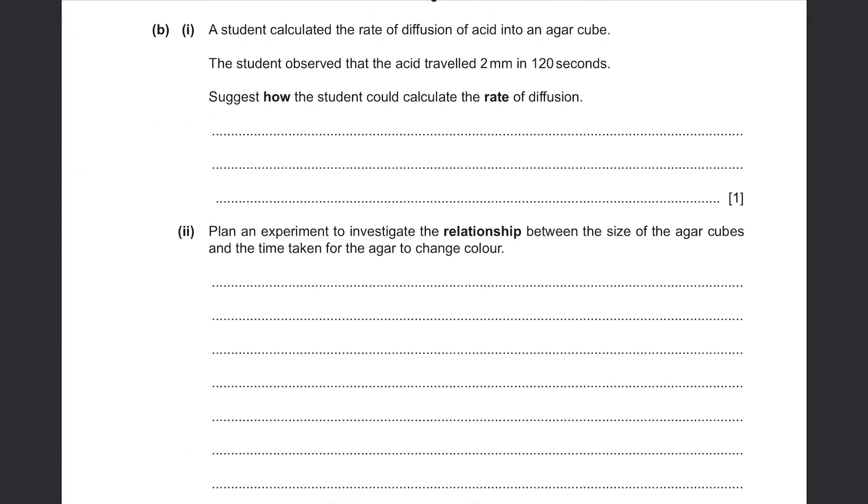Part B, a student calculated the rate of diffusion of acid into an agar cube. The student observed that the acid travelled 2 mm in 120 seconds. Show how the student could calculate the rate of diffusion. Well, rate is always something divided by time. In this case, it will be the distance travelled which is 2 mm. So you can either write just divide 2 by 120 or you can elaborate and write distance travelled divided by time taken.